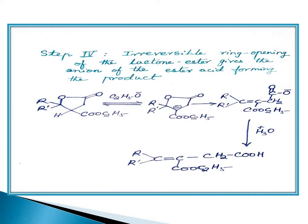After acidification (adding H⁺), we get the final product: R–R'C=C(COC2H5)–CH2–COOH — an unsaturated ester acid. This is the Stobbe condensation product: an alkylidene succinic acid (unsaturated ester acid). If sodium ethoxide is present, the sodium salt forms; upon acidification, the free acid is obtained.